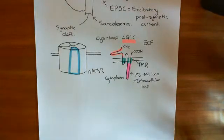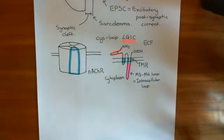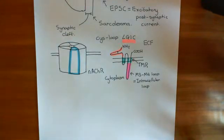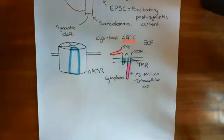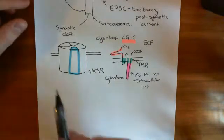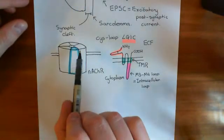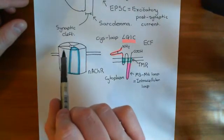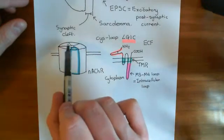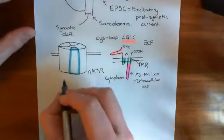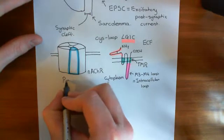We're now looking at the structure of the nicotinic acetylcholine receptor so that we can look specifically at the structure of the nicotinic acetylcholine receptor within skeletal muscle fibers, and then try and understand what happens in slow channel myasthenic syndrome. We've discussed how it's made up of these five separate proteins which come together to make this pentamer here.